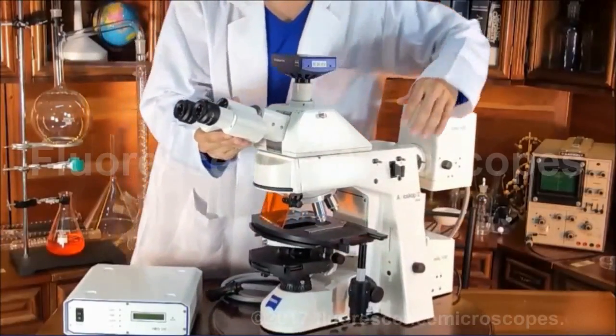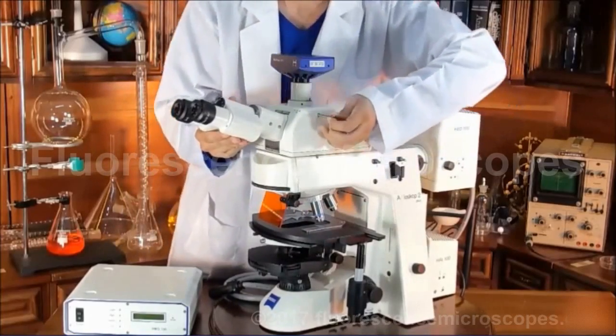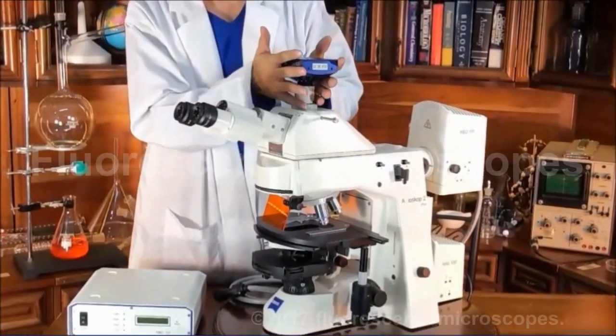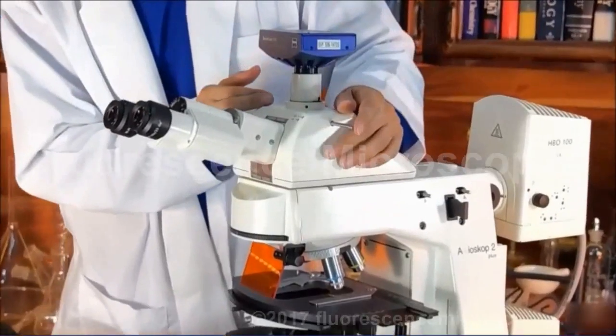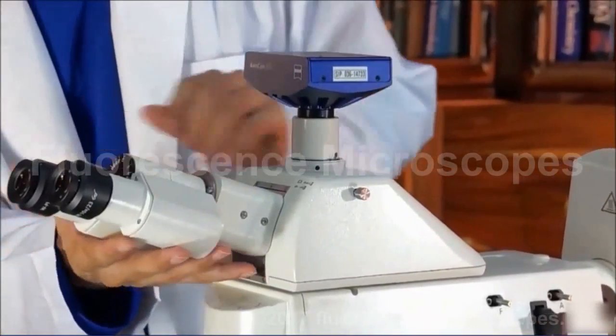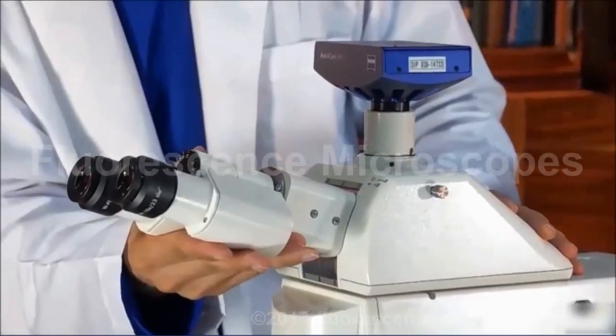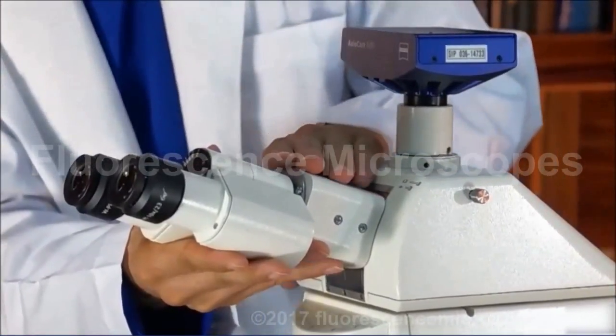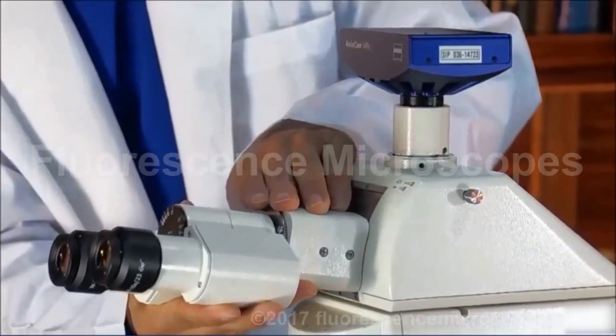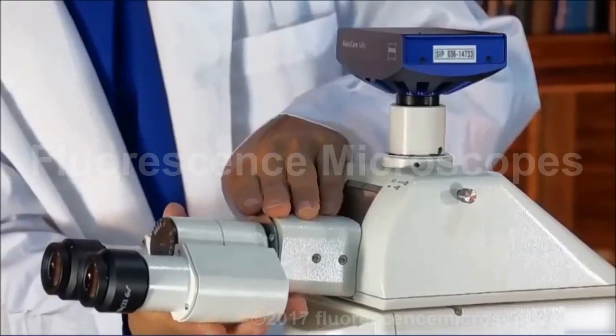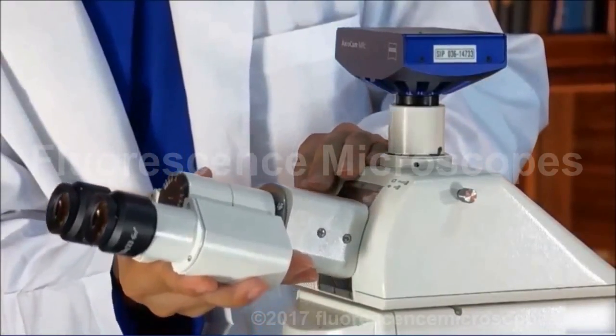Your head is a two position head. You pull it all the way out for one hundred percent light to the camera. You push it in, one hundred percent of the light to the eyepieces. This is an ergonomic head. So if a person is not quite so tall, they may want to adjust this down. If you're a little taller, you're probably going to want this higher.